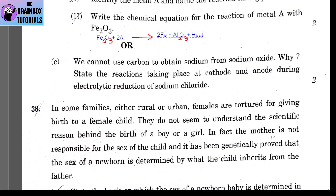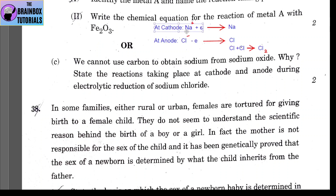We cannot use carbon to obtain sodium from sodium oxide because sodium is a highly reactive metal with a higher affinity towards oxygen than carbon. At the cathode during electrolytic reduction of sodium chloride: Na⁺ + e⁻ → Na (sodium ion gains an electron to form sodium metal). At the anode: Cl⁻ → Cl + e⁻, and two Cl atoms combine to form chlorine gas (Cl₂).